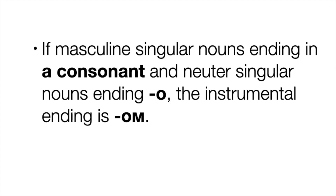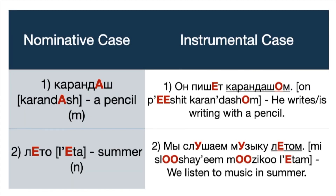If masculine singular nouns end in a consonant, and neuter singular nouns end in -о, the instrumental ending is -ом. Number one: карандаш — masculine noun → карандашом. Example: Он пишет карандашом — He writes with a pencil. Number two: лето — neuter noun. Example: Мы слушаем музыку летом — We listen to music in summer.